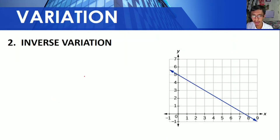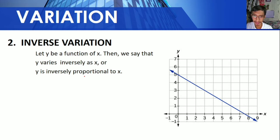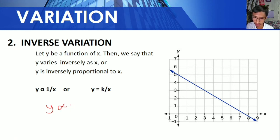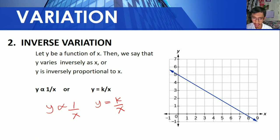The next variation is inverse variation. Let y be a function of x — we say y varies inversely as x, or y is inversely proportional to x. Since inverse means the reciprocal of x, that is 1 over x, we introduce constant k to get y is equal to k over x. Inversely proportional means as y increases, x decreases.